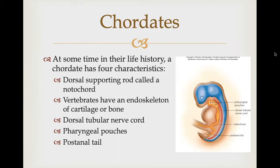That covers echinoderms. Let us jump into the next major group of deuterostomes — the chordates. At some point in its life history, a chordate in the phylum Chordata has four characteristics. The first is a dorsal supporting rod called a notochord, located just below the nerve cord on the dorsal side. Vertebrates have an endoskeleton of cartilage or bone, including a vertebral column that replaces the notochord during development. Another major feature is the dorsal tubular nerve cord — tubular means the cord contains a fluid-filled canal. In vertebrates, the nerve cord is protected by the vertebrae and is called the spinal cord.